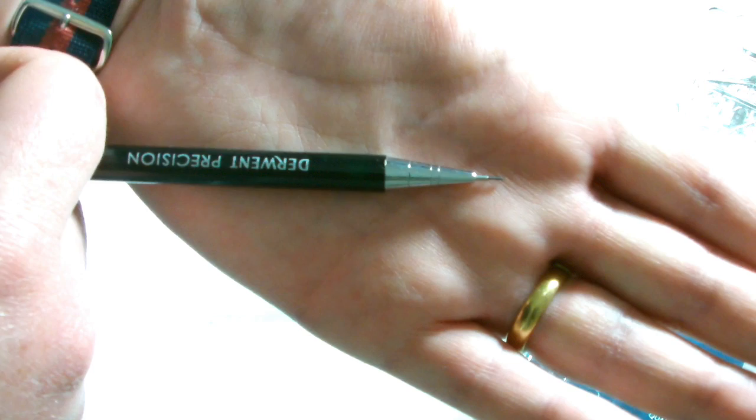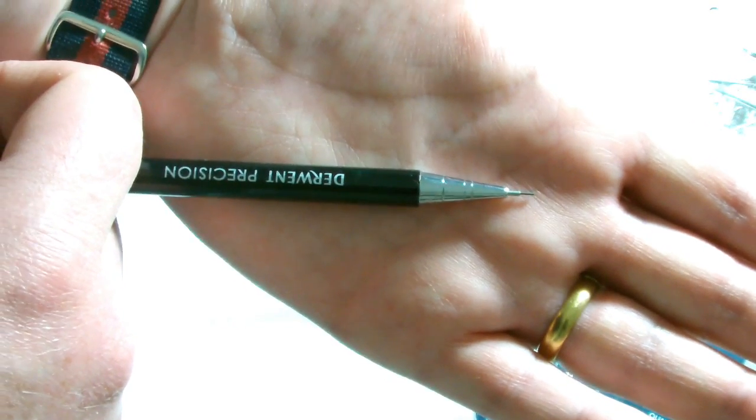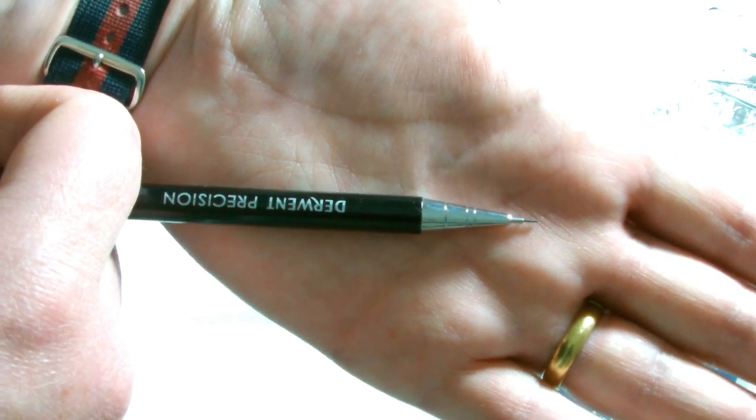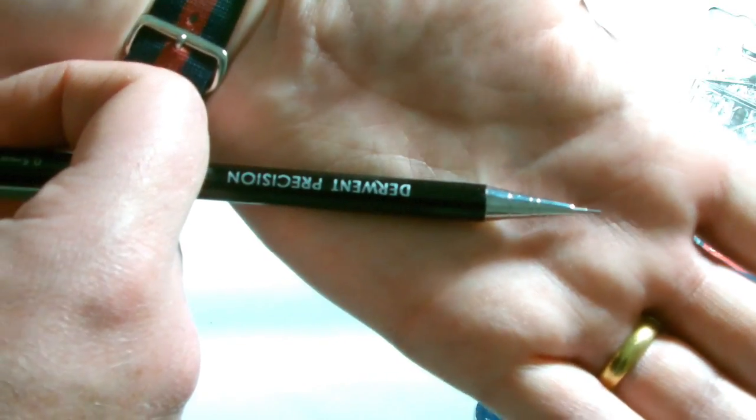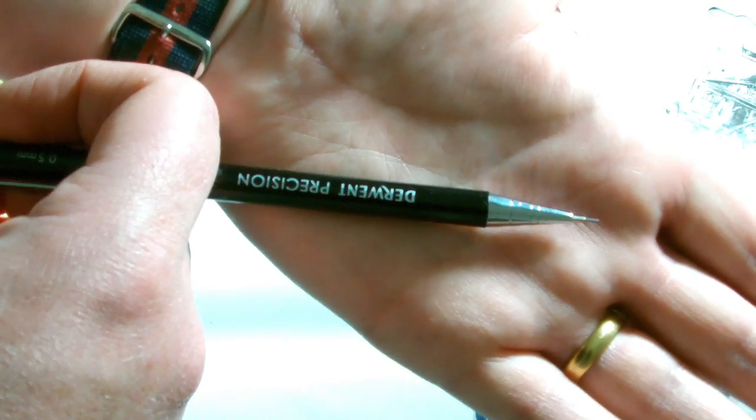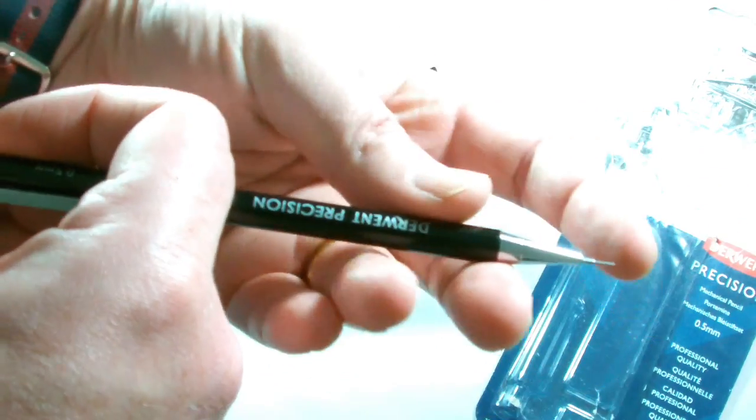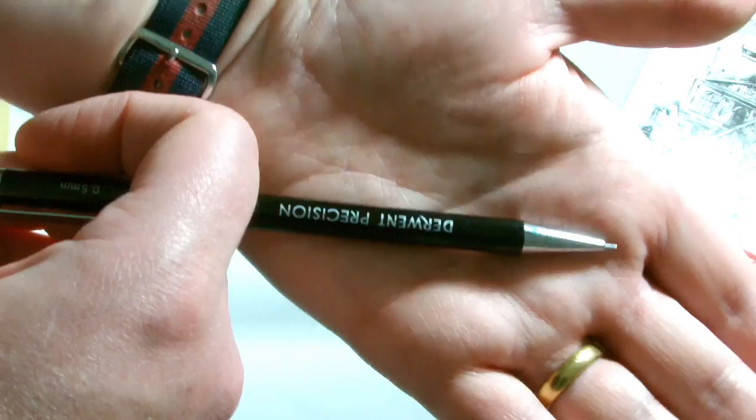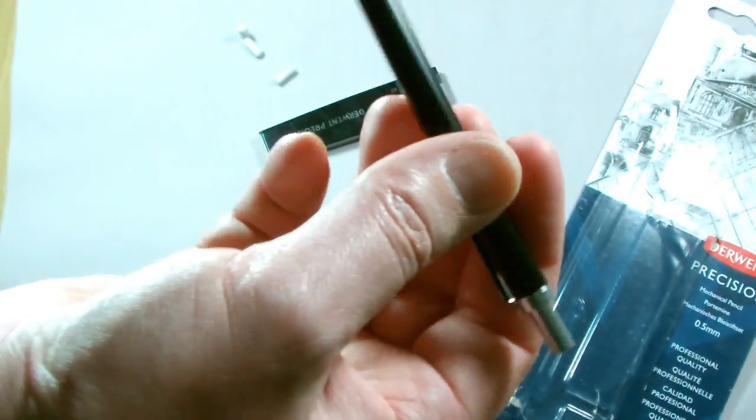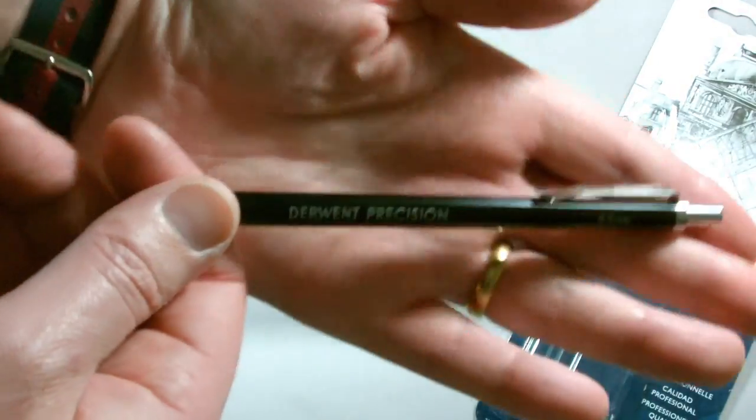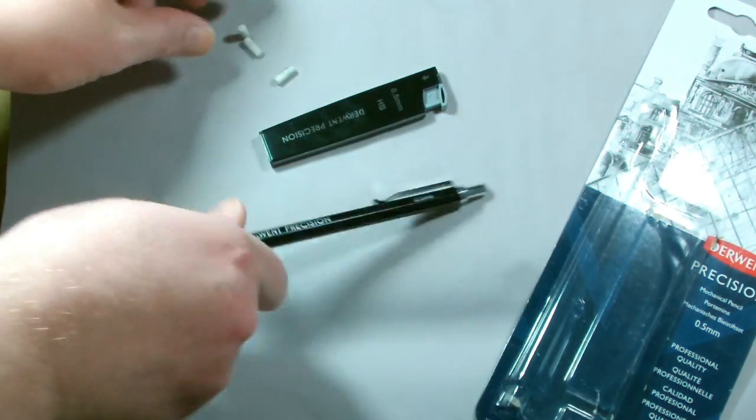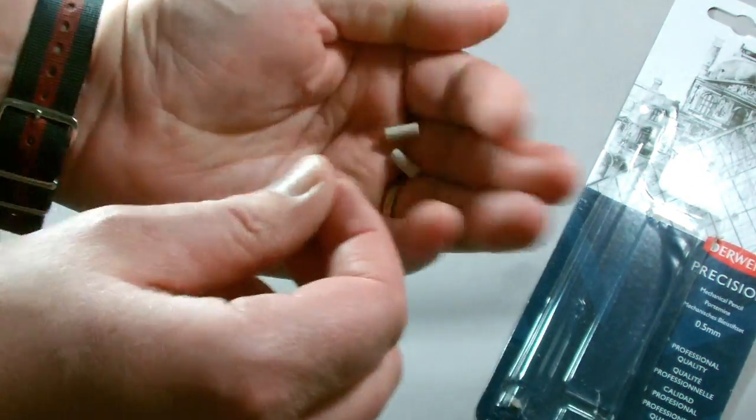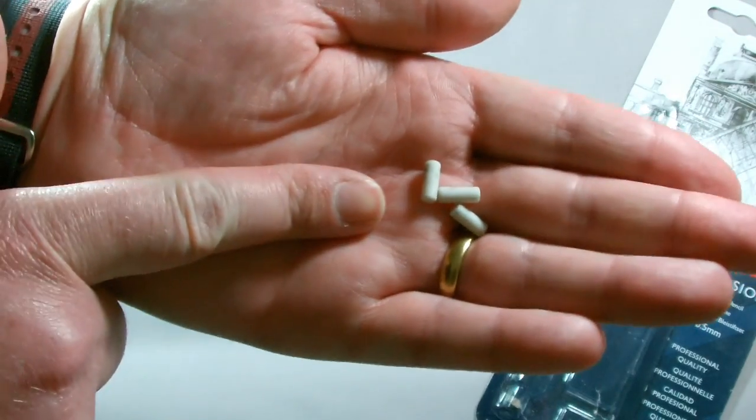Now in terms of the graphite, the two grades that Derwent are releasing this pencil with are HB and 2B, so this pencil here at the minute has HB but you can get a 2B lead for it as well. Now I don't know whether later down the line Derwent are going to come out with a 2H and a 4H or a 4B or whatever, it's possibly something that they'll look into later on down the line, but for now the two cores that they're releasing this pencil with is HB and 2B which I think are probably two of the most popular cores that you would use with any pencil.